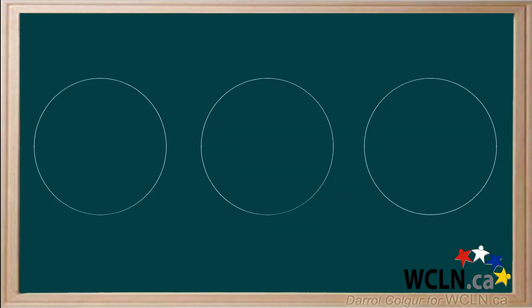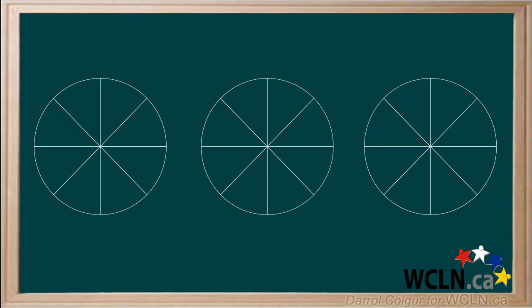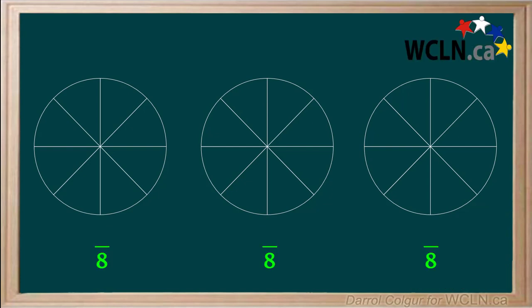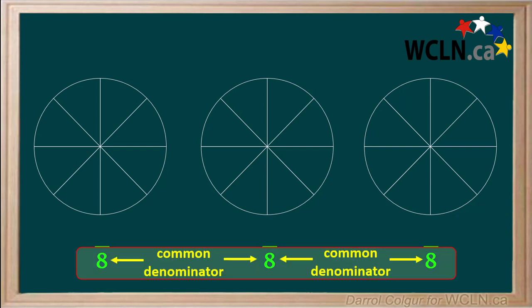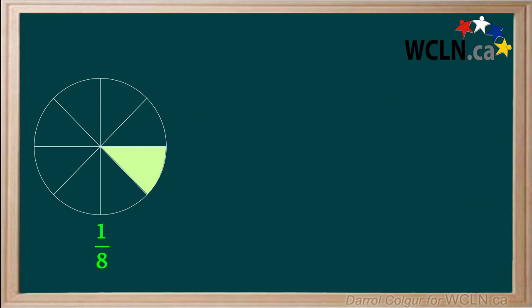Having common denominators also makes it easy for us to add and subtract fractions. Here are 3 identical circles. Now we'll divide each circle into 8 equal parts. Because the denominator of a fraction is the number of parts, we can write fractions for each circle, and they all have a denominator of 8. So they all share a common denominator of 8. We filled one of the eighths of the first circle. This represents the fraction 1 eighth.